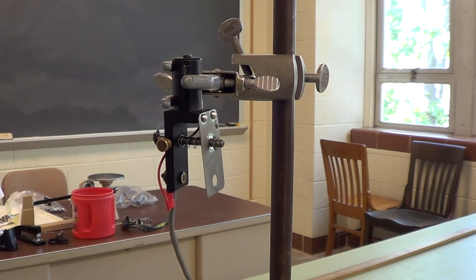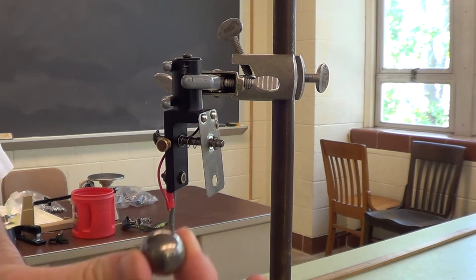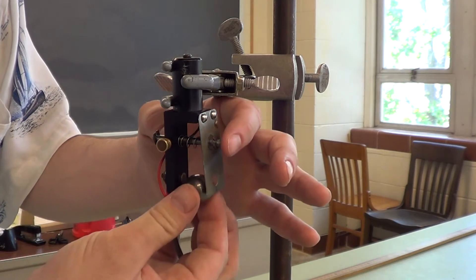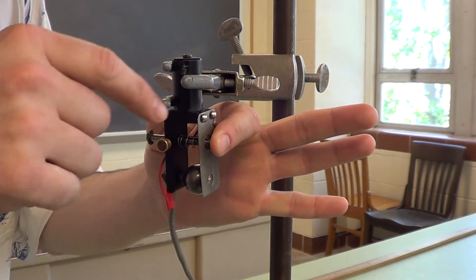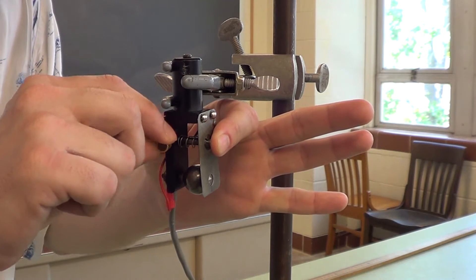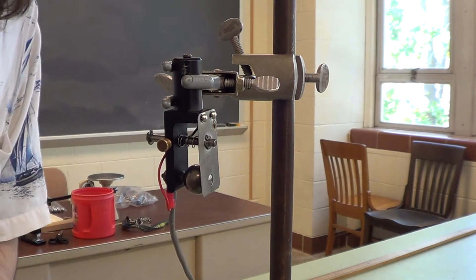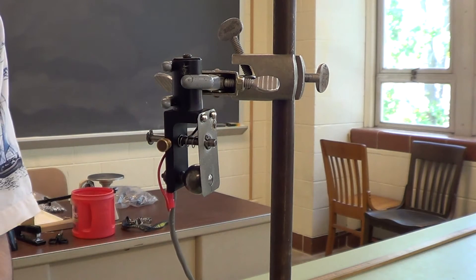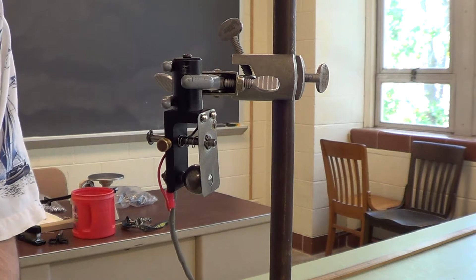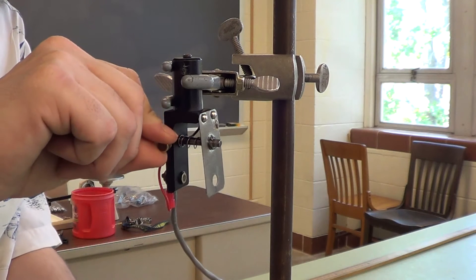The trick to putting the ball in the ball dropper is just this. We take the ball and place it in the cradle of the ball dropper, like so, pressing down on the pin. Then we tighten down the set screw to hold it in place. At this point we're ready to begin our drop. To do so, all we have to do is release the set screw.